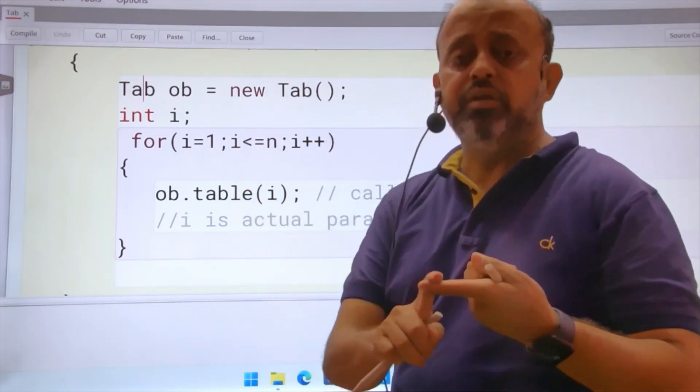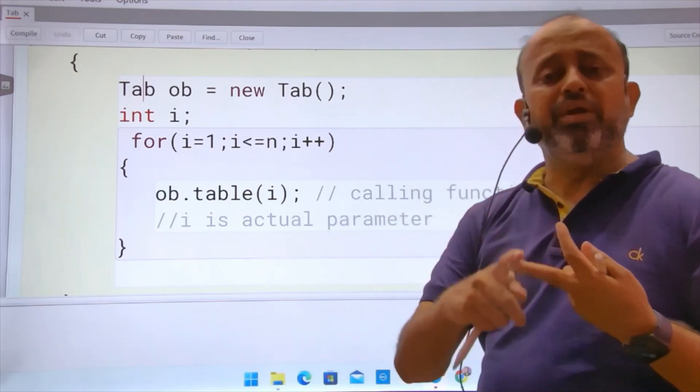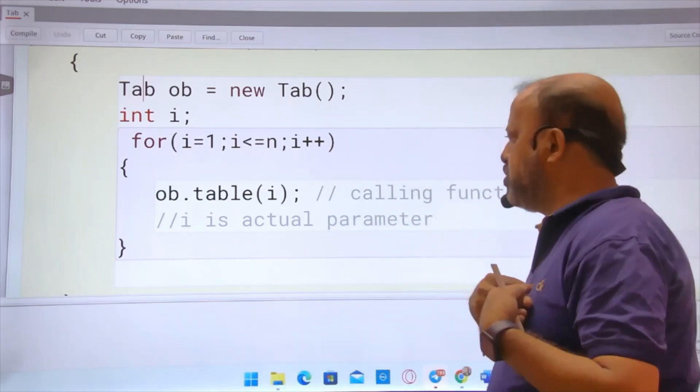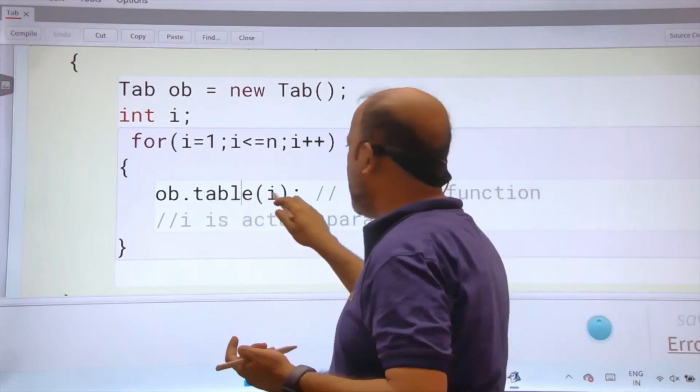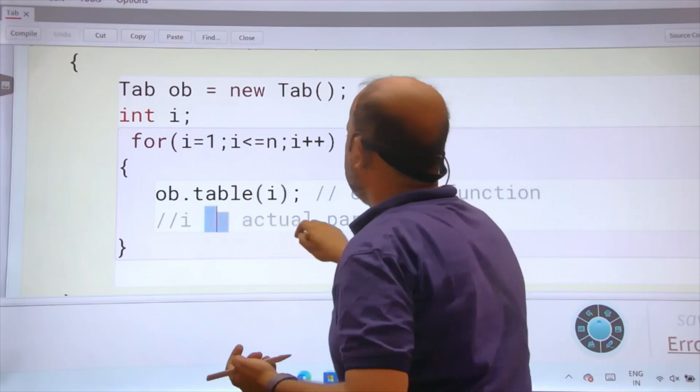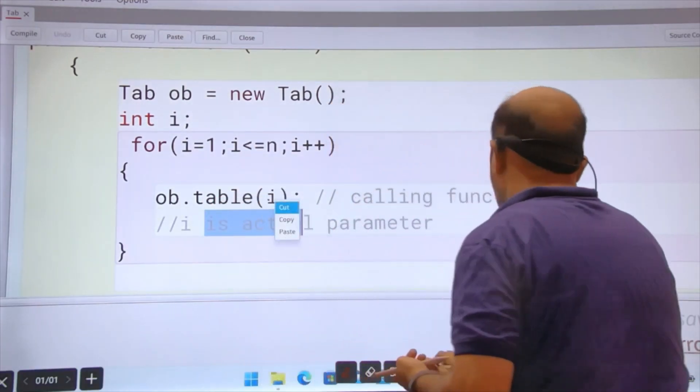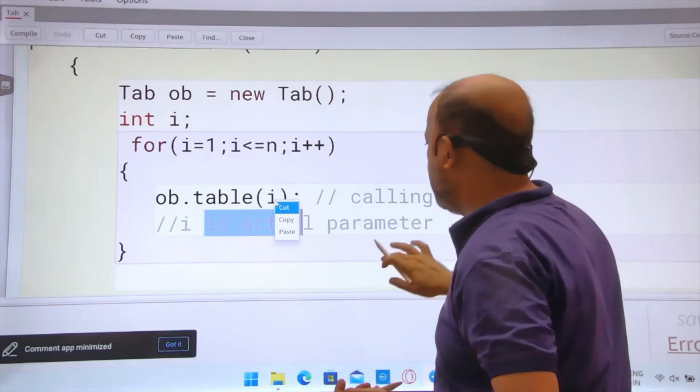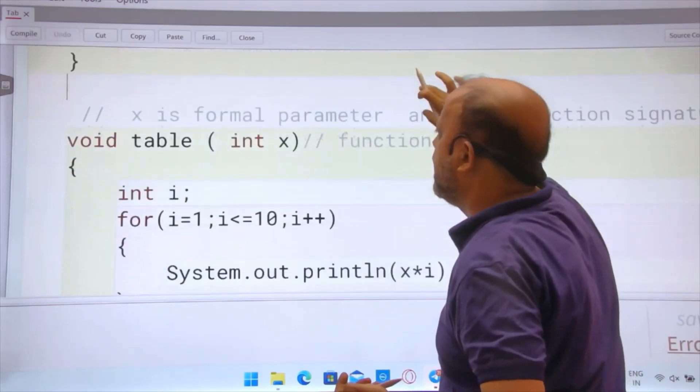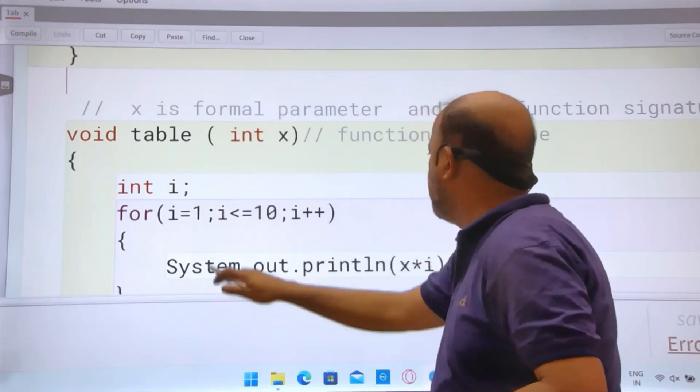This i is what? Actual parameter. I is the actual parameter. When you write ob dot table i, what happened? It went here. Here x is formal. Void table int x. Here it's doing the table of any number.